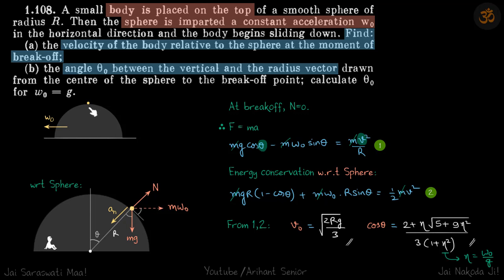A small body is kept on top of a smooth sphere and the sphere is traveling with acceleration omega naught. We need to find the velocity of the body when it breaks off from the sphere and angle theta naught when that happens.